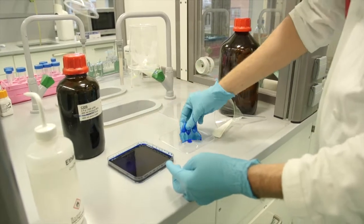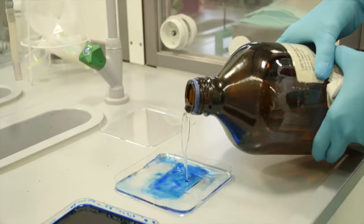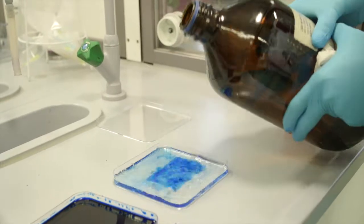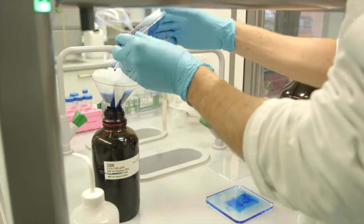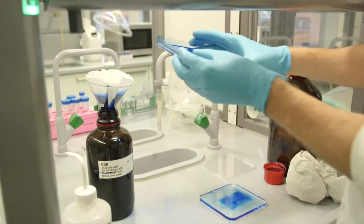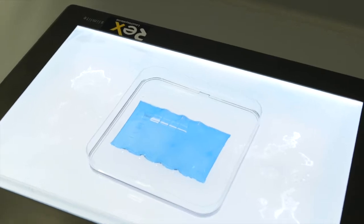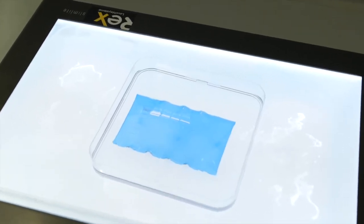Remove the gel from the CBB stain and place the gel in the de-staining solution until it is completely immersed. The CBB staining solution can be poured back in the bottle using a filter and funnel. After de-staining the gel, it can be viewed on a light box.